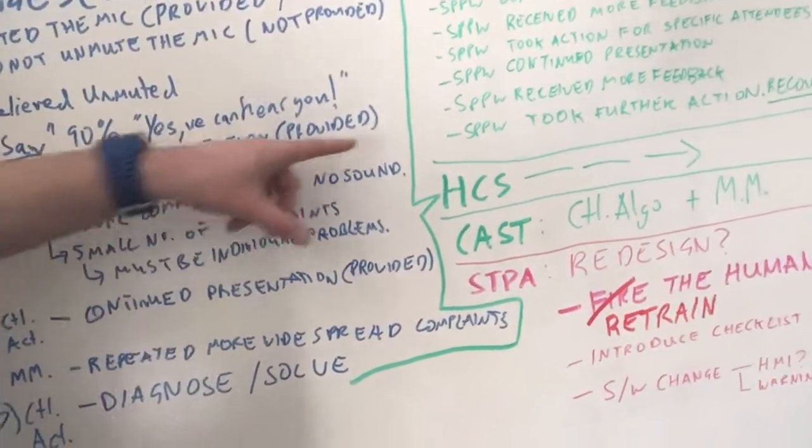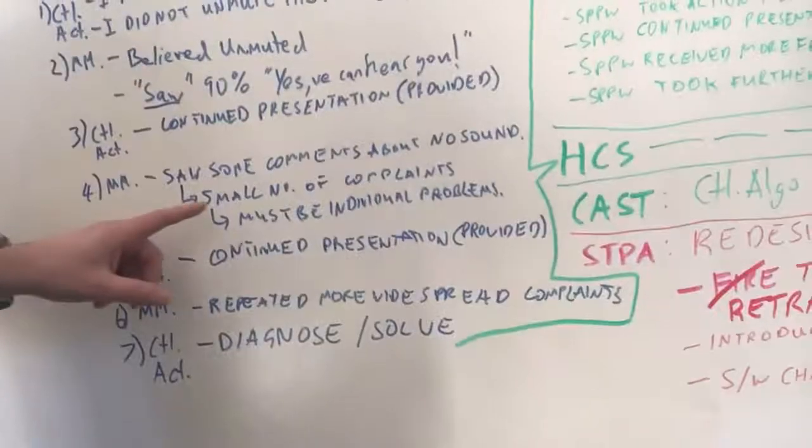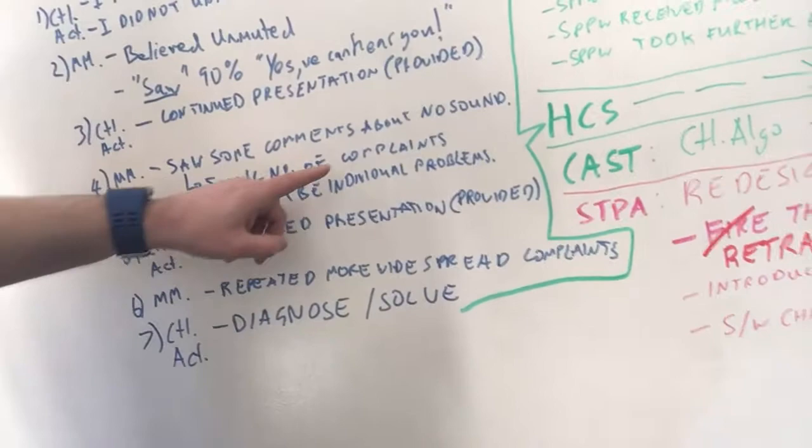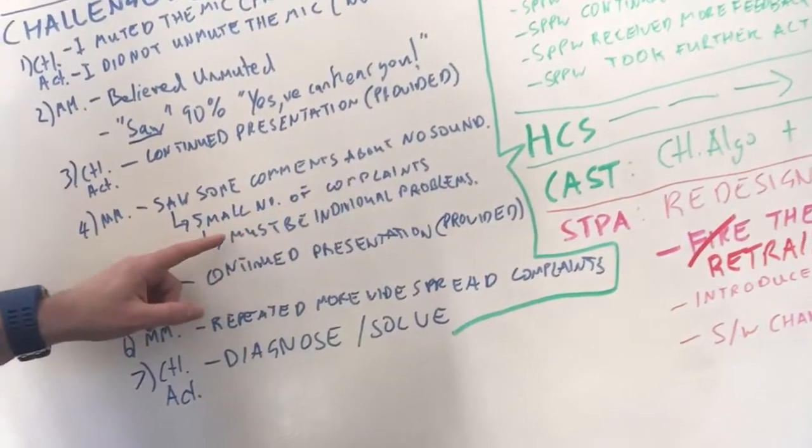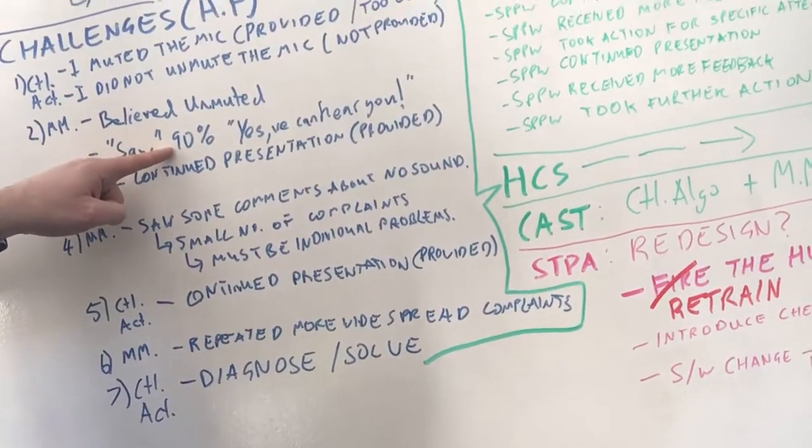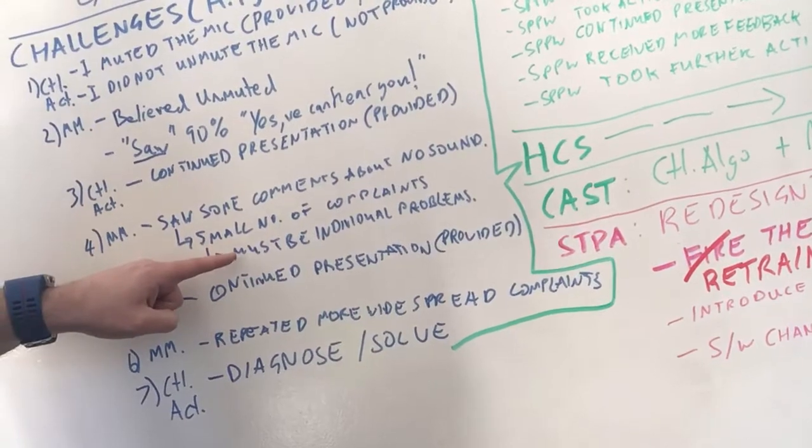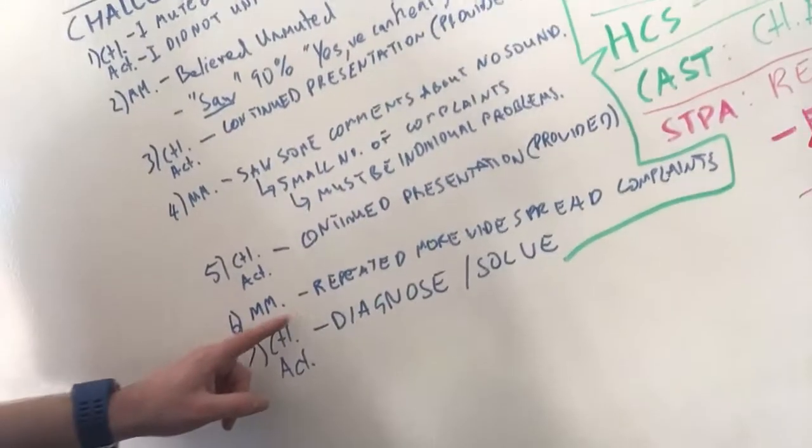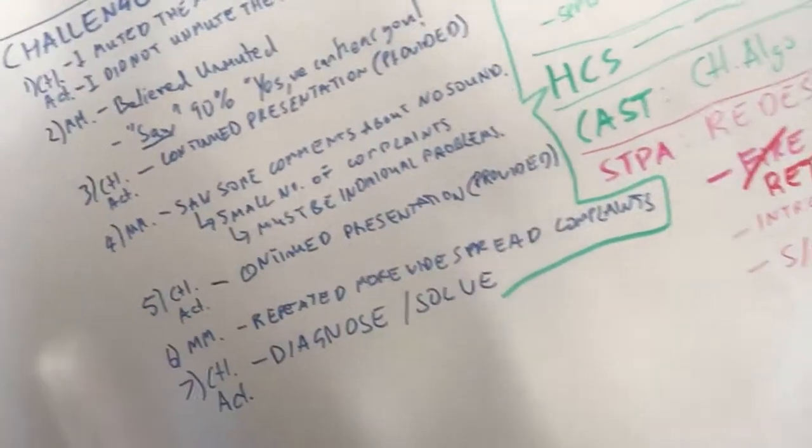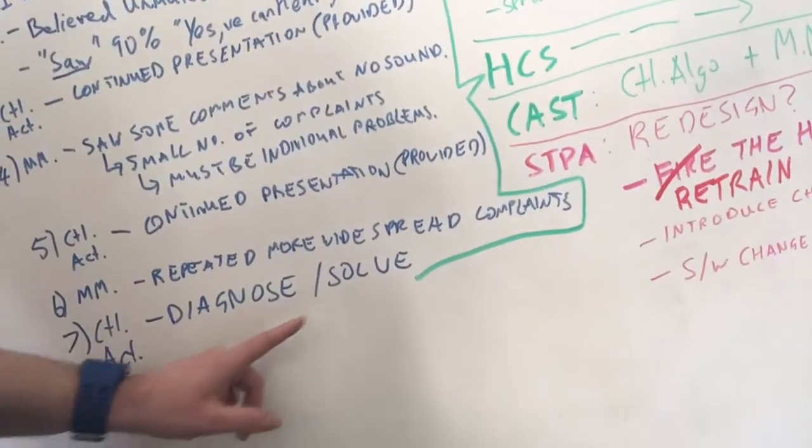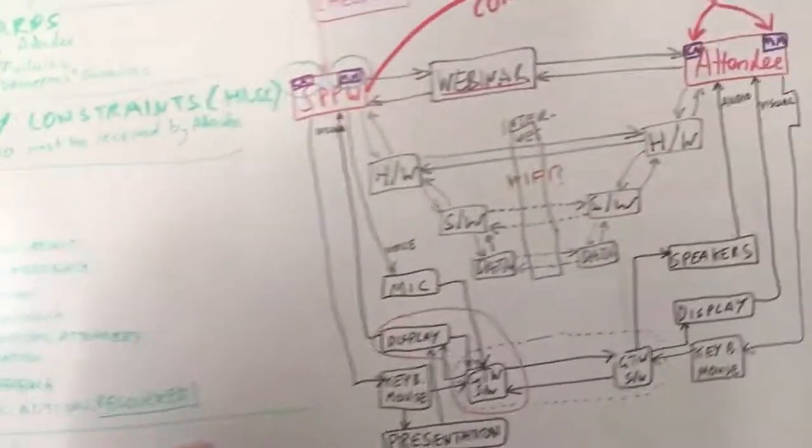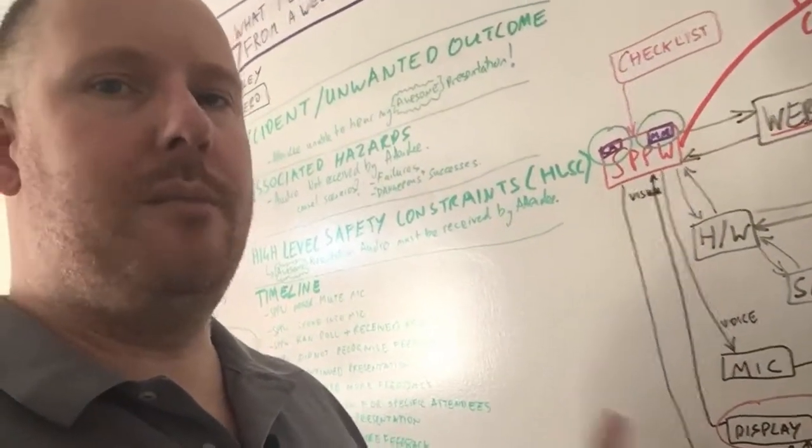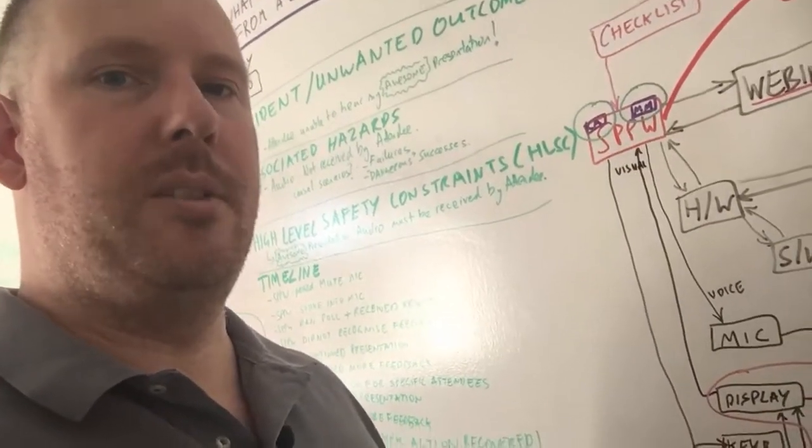So control action: I continued presenting, provided. Mental model: I saw some comments about no sound. So there was a small number of those complaints. So I just presumed because it was a small number, thinking back, I thought I'd got 90% could hear me. So this is a small number. It's not a widespread issue. So it must be then, it must be the individual that has the problems. So I continued presenting, provided. Now my mental model was updated. So I've repeated more widespread complaints. So that's when I decided to diagnose and then solve the issue. So carrying on with the process then, I've thought about that. Well, now that we understand, my control algorithm and mental model was not appropriate until I got more evidence, more information that convinced me I needed to look further and then recover the situation.